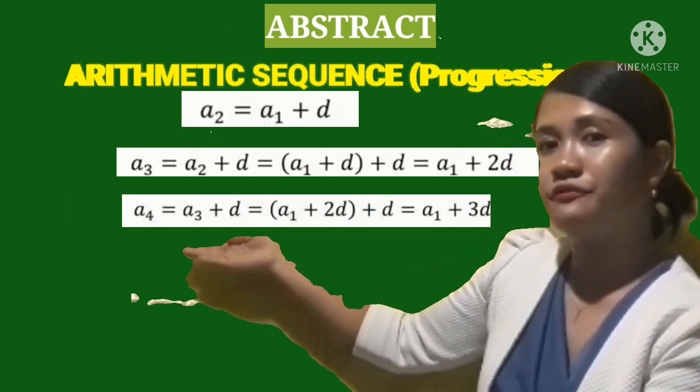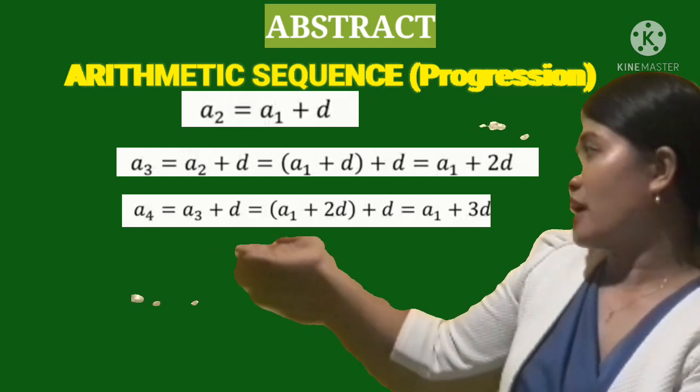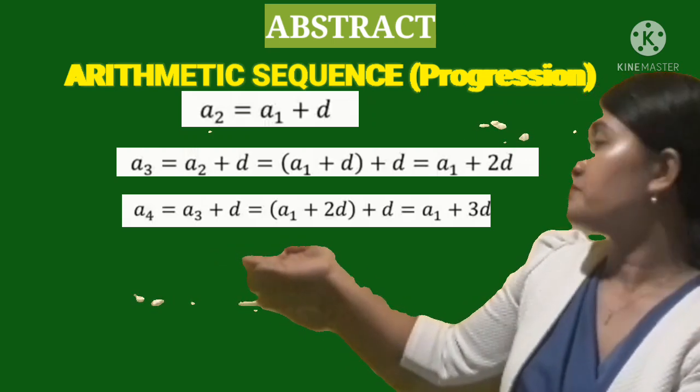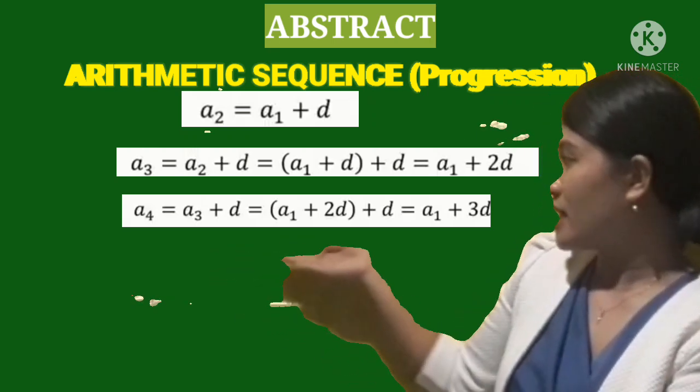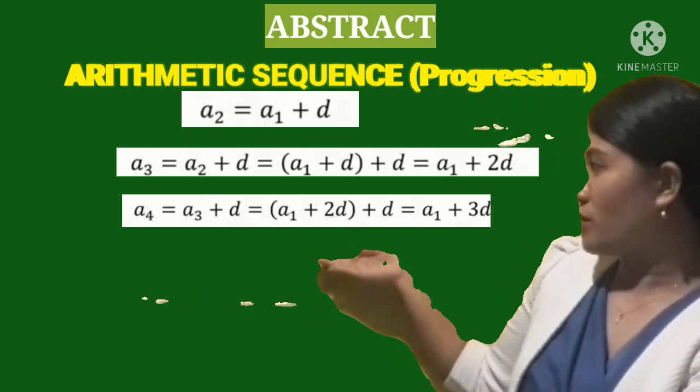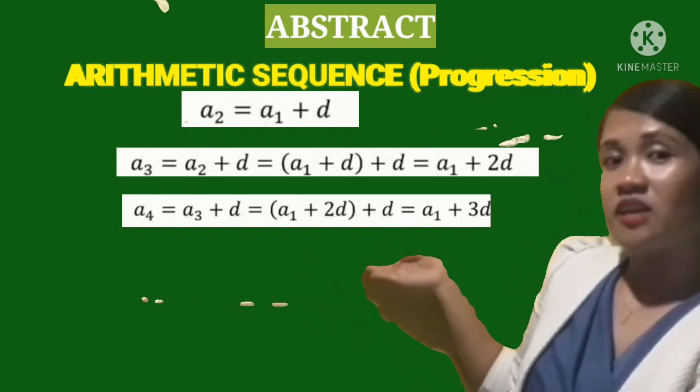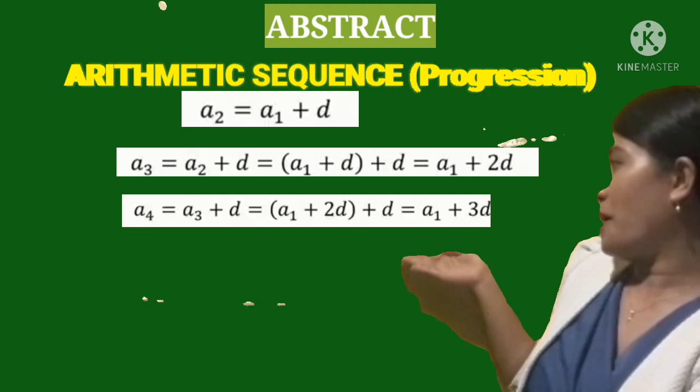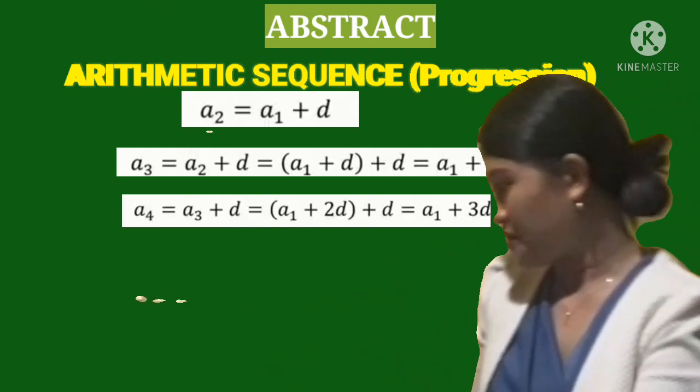Now the fourth term, we have A sub 4, is equal to A sub 3 plus d, which is A sub 3 is equivalent to A sub 1 plus 2d. Copy the d. So we have A sub 1 plus 3d and so on and so forth.